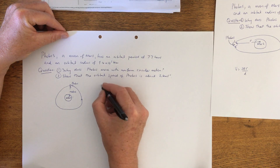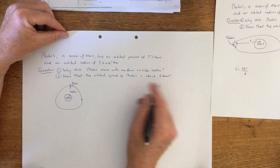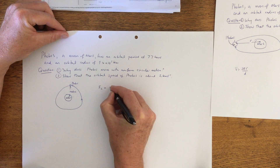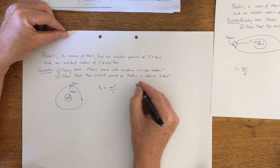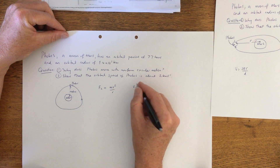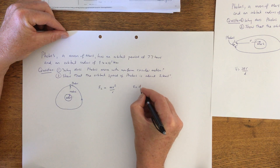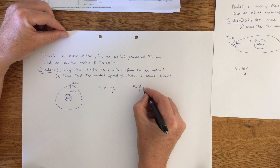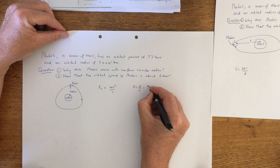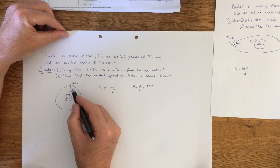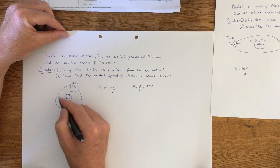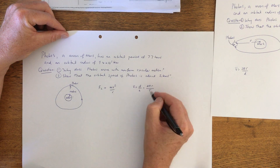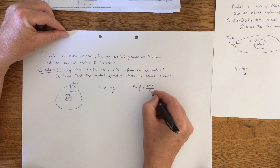The two formulas you need to know in this context are that the centripetal force is mv squared over r, and also that velocity is the distance divided by the time. In this particular case the distance is 2 pi r, because this is the circumference of the circle, and the time is the period of motion.